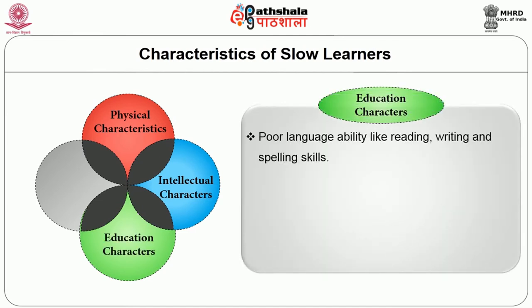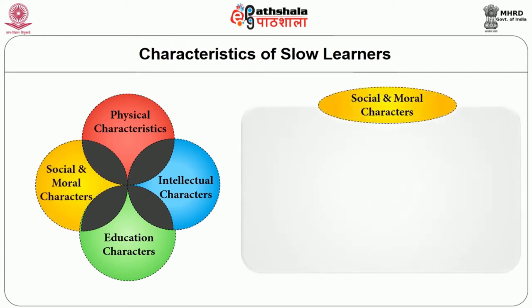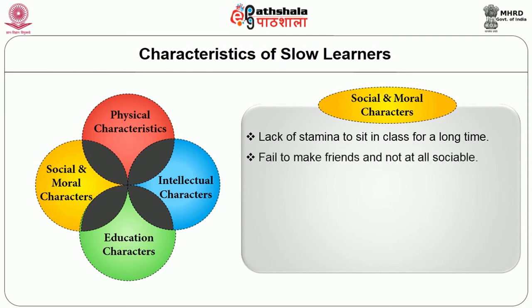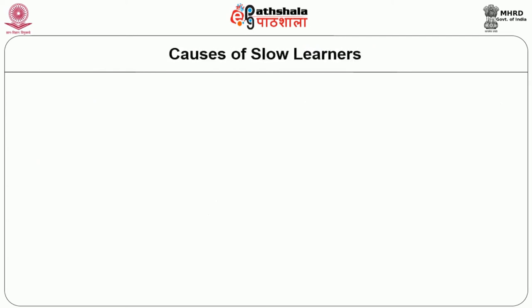Educational characteristics of slow learners include poor language ability in reading, writing and spelling skills, and a negative attitude towards learning with slow academic achievements. Social and moral characteristics include lack of stamina to sit in class for a long time, failure to make friends, being unsociable, afraid and self-conscious. They tend to daydream and make good adjustments in non-academic pursuits.